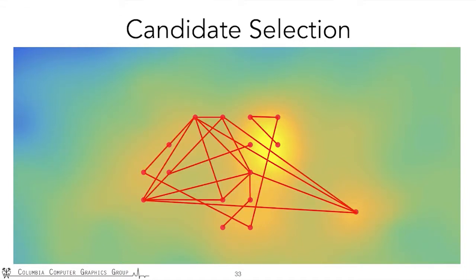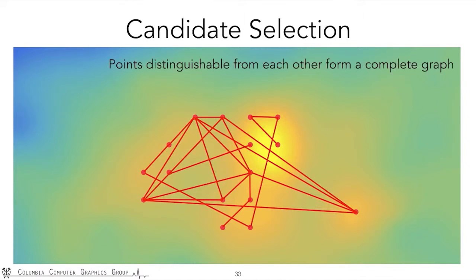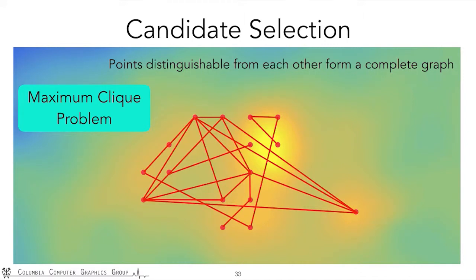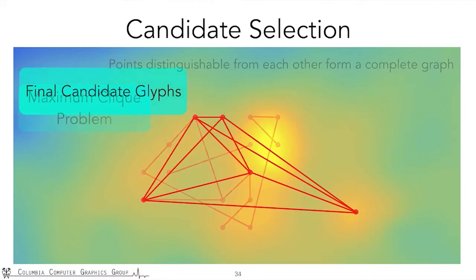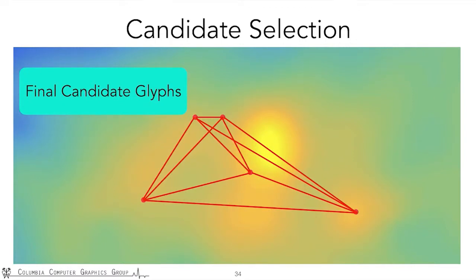We test the distinguishability for all pairs of nodes and get a rather messy graph. But what we really want is that all glyphs in our final set are distinguishable from each other, and the set is as large as possible to increase embedding capacity. This means we need to identify the largest subgraph that is completely connected — a classic problem in graph theory called the maximum clique problem. Although it is NP-hard, there exist several fast approximate algorithms, especially when the number of nodes is small. We solve the maximum clique problem and obtain a clean, complete graph. Those are the final perturbed glyphs we want to use.